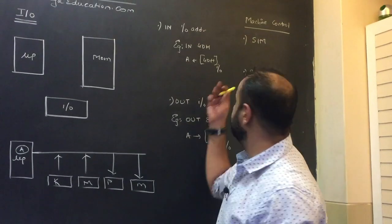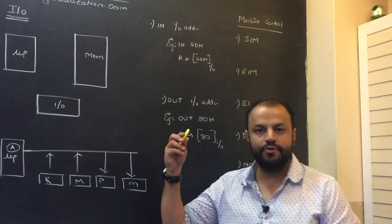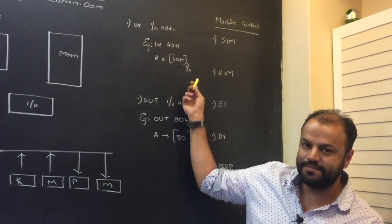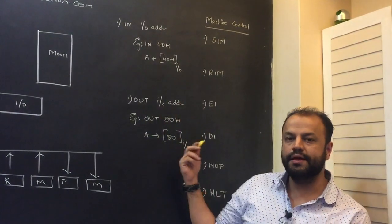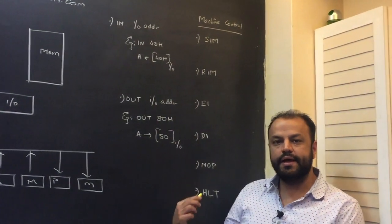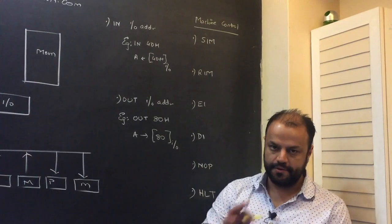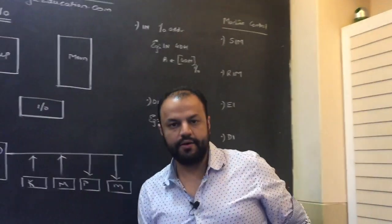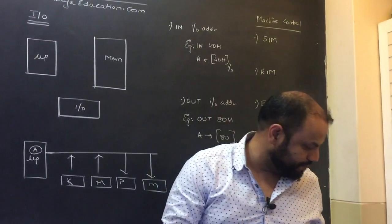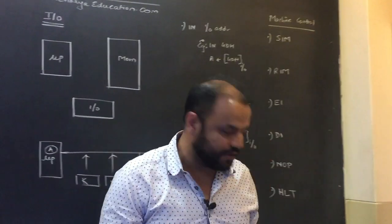Finally, in Machine Control, you've got instructions like SIM, RIM, EI, DI, NOP, and HALT. All of these instructions we're going to cover.